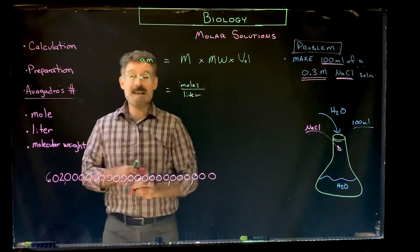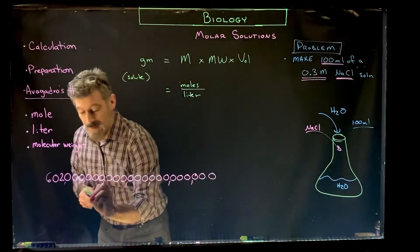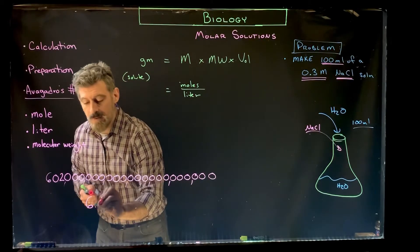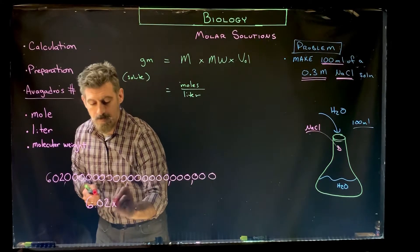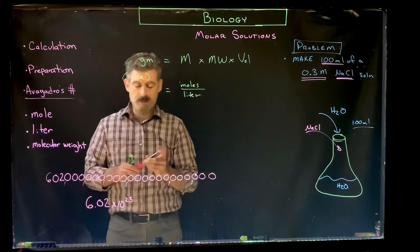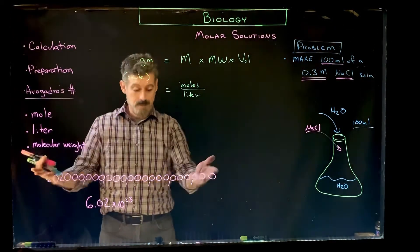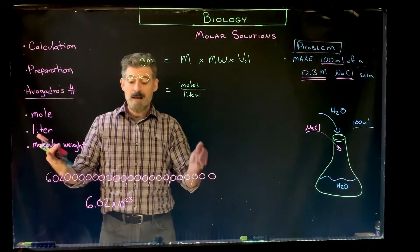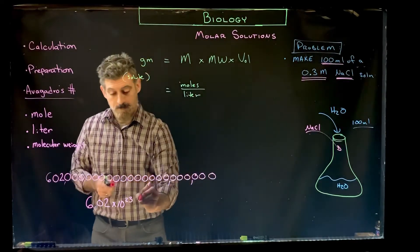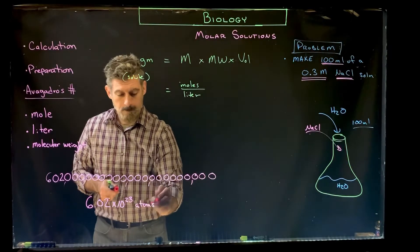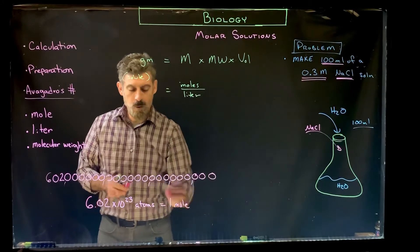There we go. This many atoms. Or we usually write it 6.02 times 10 to the 23rd power. And so that is what we call Avogadro's number. This gigantic number. And it means this many atoms equals one mole.